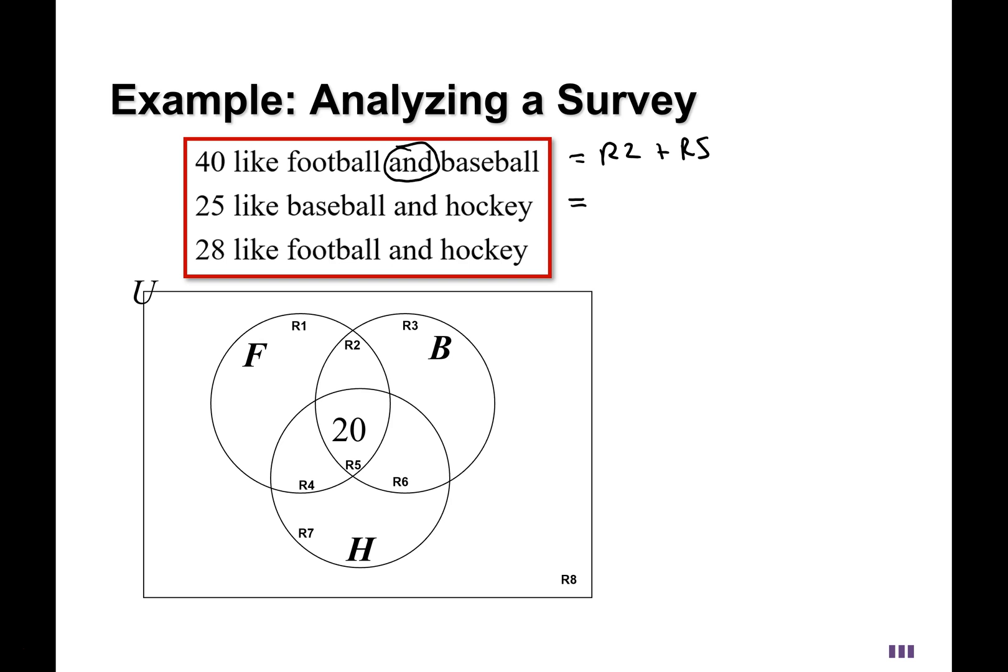And then in that case, we'll be able to get all of these. Baseball and hockey, the intersection there is region 6 and region 5. That's the overlap between the baseball and hockey circle. And then finally we have football and hockey, and that's going to be region 4 and region 5. But we know region 5 already. We know that region 5 is 20. So region 2 plus 20 should be 40. Region 6 plus 20 should be 25. And finally, region 4 plus 20 should be 28.